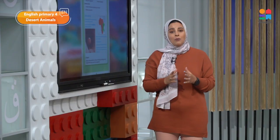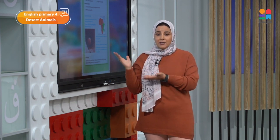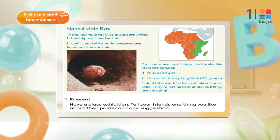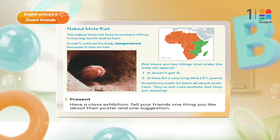Well done. Now my dear students, let's have some fun. You can look at the poster and talk about it to your friends and family. Let's read together about the naked mole rat. The naked mole rat lives in Eastern Africa. It has big teeth and no hair. It can't control its body temperature because it has no hair. الحيوان النهارده اللي هنتكلم عنه هو unpopular عشان شكله مش حلو — وده بيعيش في Eastern Africa، سنانه كبيرة، وما عندوش أي hair أو fur، وما بيقدرش يcontrol درجة الحرارة في جسمه.